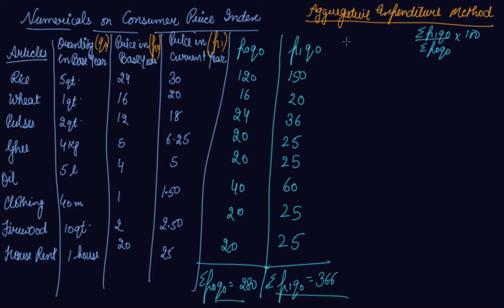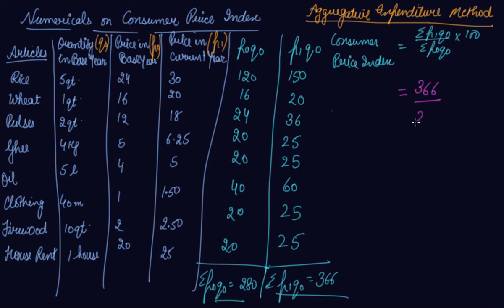Now the consumer price index formula gives us: P1Q0 is 366 divided by P0Q0 which is 280, into 100. So we get an answer of 130.7 as our consumer price index by the aggregative expenditure method.